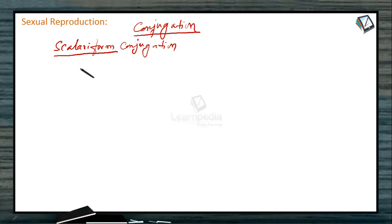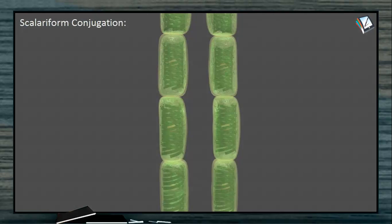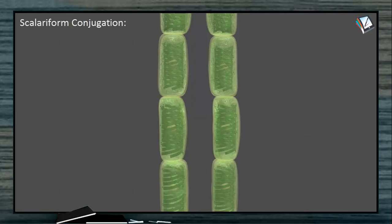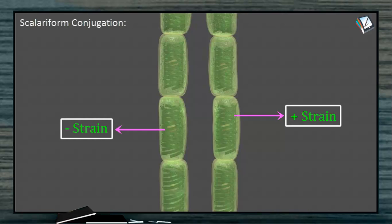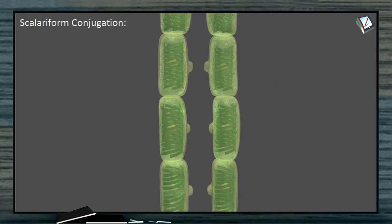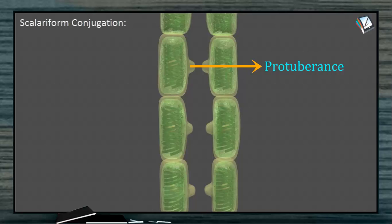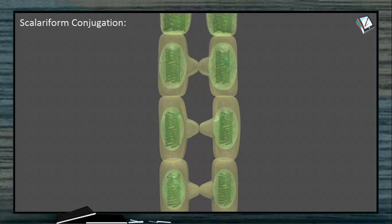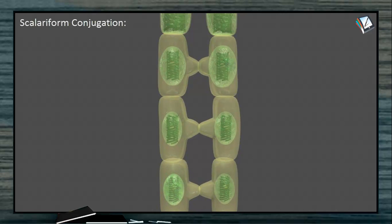Scalariform means ladder — the two filaments lying parallel look exactly like a ladder. In scalariform conjugation, two filaments lie parallel to each other and one cell corresponds to the cell of the other filament. One filament is called plus and another is called minus, meaning the sexes are separate, but since they cannot be identified morphologically they are called plus strain and minus strain. These two filaments produce protuberances in opposite directions, and finally they come into contact with each other, where the cell wall dissolves, forming a canal.